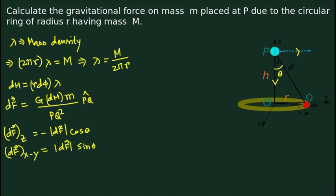If we consider the mass element on exactly the opposite side of the ring, its xy-plane force component points in exactly the opposite direction to the first element's xy-component, so they cancel. Extending this argument to the whole ring, the total force component in the xy-plane is zero, and we are left with only the z-component.